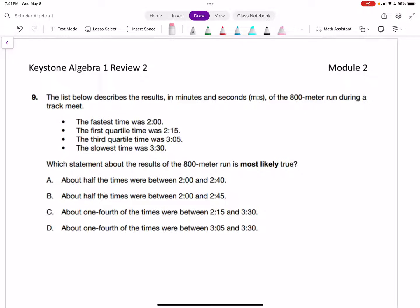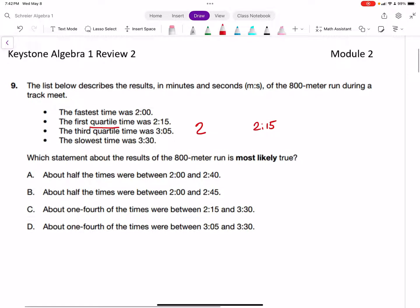Let's set up a picture. The fastest time is 2:00, and the first quartile is 2:15. What do we mean by first quartile? That's where 25% of the data is. A quarter is 25 cents, so 25% or a quarter of the times live between here.